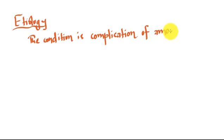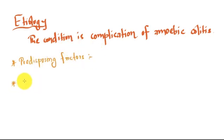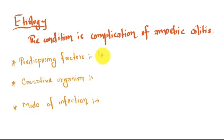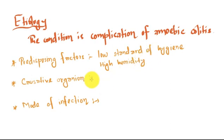Let's talk about etiology. Amoebic hepatitis or abscess is a complication of amoebic colitis. In etiology we should talk about three things: predisposing factor, causative organism, and the mode of infection. The predisposing factor here is low standard of hygiene and high humidity.